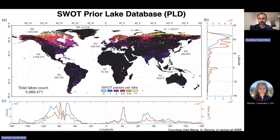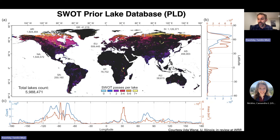What about lakes? Just like for rivers with SWORD, we have a prior lake database. We have about 6 million lakes that we're hoping to observe with SWOT, and just like for rivers, we have a set of vector data products for this prior lake database representing SWOT data.